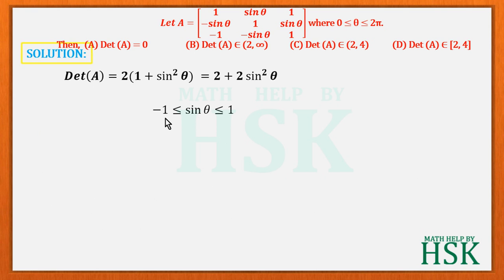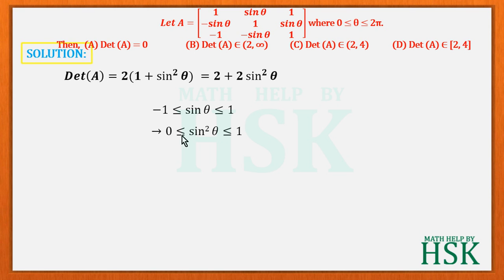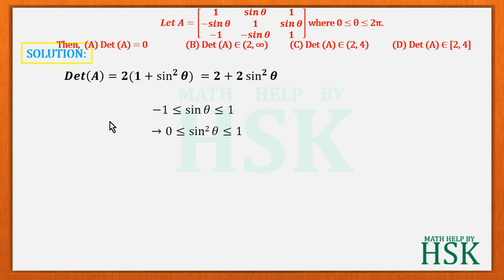We know that sin θ lies between −1 and 1, inclusive. Therefore, sin²θ lies between 0 and 1, inclusive — that is, 0 ≤ sin²θ ≤ 1 — because squaring sin θ gives a minimum value of 0 and a maximum value of 1.